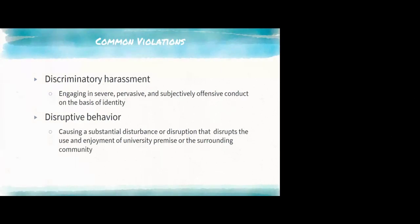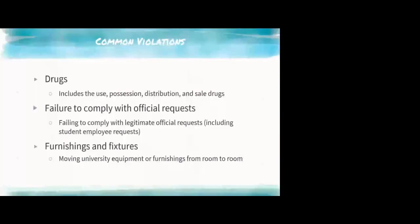Discriminatory behavior covers a wide array of situations, often seen in vandalism in the halls. It's based on identity — race, gender, sexual orientation, religion, and more. We want students to feel comfortable and free of harassment. Disruptive behavior is broad: students disrupting others from enjoying or using university premises. This includes, for example, belligerently running down halls while drunk and loud. Drugs — pretty much any use of illegal drugs — falls under this category, with marijuana being the most prevalent.